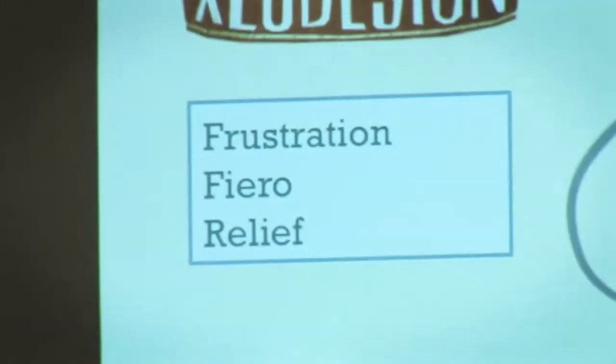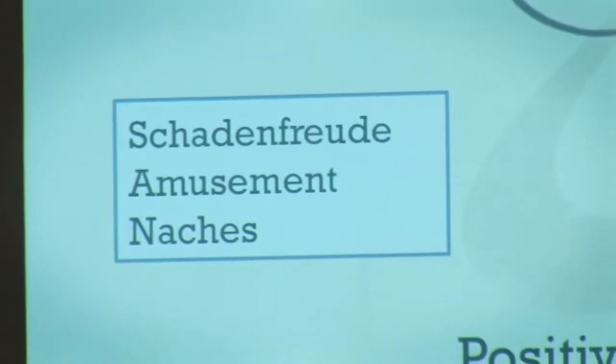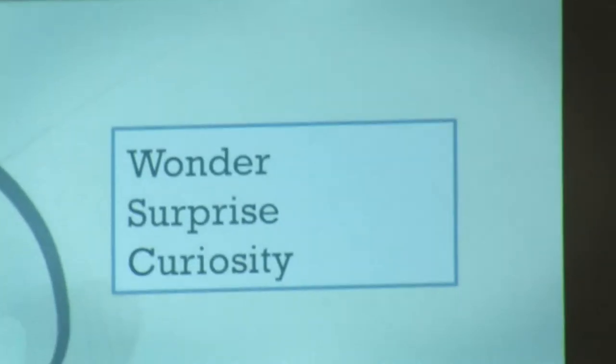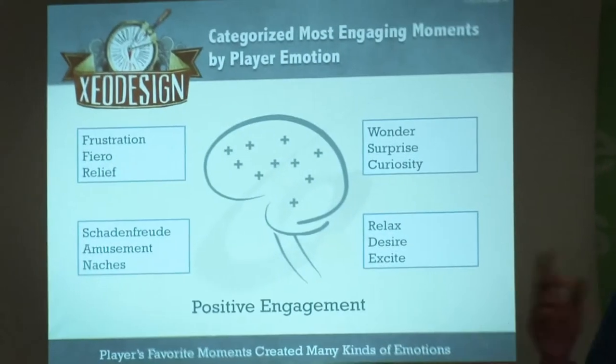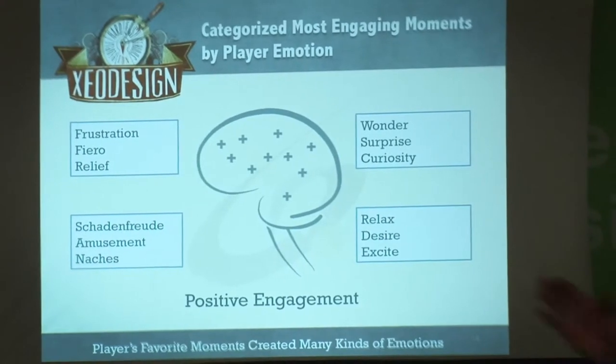What we did to go deeper into what creates engagement in games was watch people play, then sort their favorite moments by the emotions they were feeling. We measured emotions on their faces using Paul Ekman's facial action coding — measuring seven emotions in the face, others in the body — and then grouped them into four categories: wonder, surprise, desire, relaxation, schadenfreude, amusement, nachas (pleasure and pride when someone you helped succeeds), frustration, fiero, and relief. All of these different moments in games were distinct, coming from different aspects.